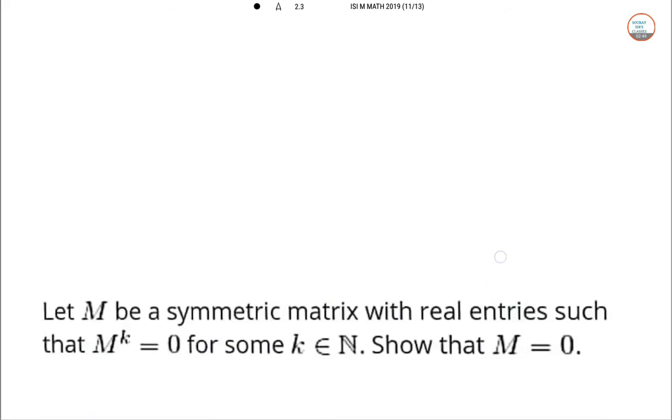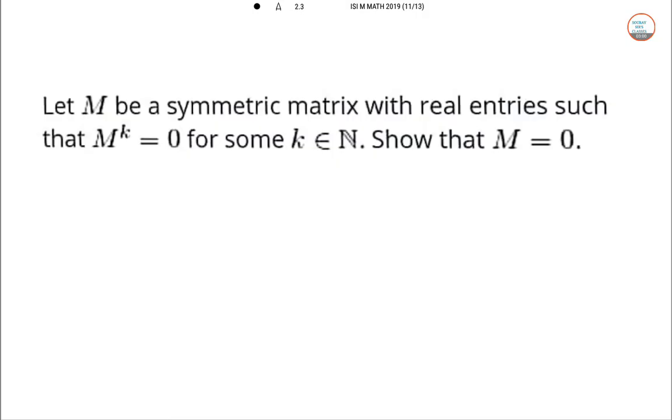This one is of linear algebra. Question number 8: Let M be a symmetric matrix with real entries such that M^k = 0 for some k ∈ ℕ. Show that M = 0.